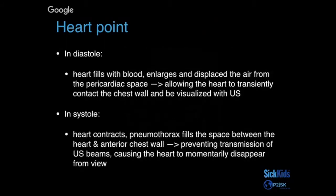Just to summarize: you see the heart point because in diastole the heart fills with blood and enlarges enough for the air to be displaced from the pericardial space, so you see the heart. Then when the heart contracts, the air within the pneumothorax fills the space between the heart and the anterior chest wall, so you don't see the heart transiently. That's the mechanism — pretty neat.